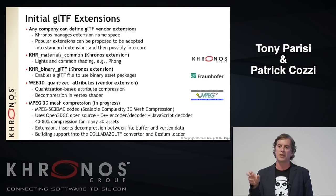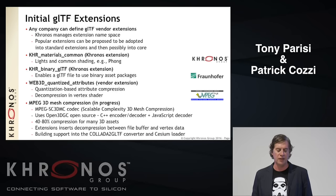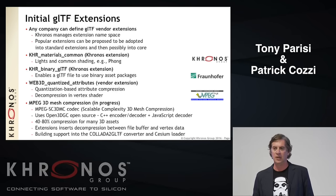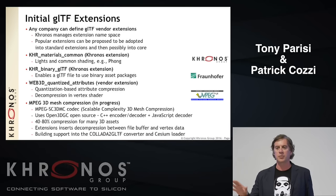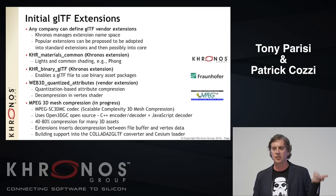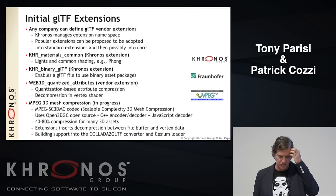We have an extension mechanism, Khronos-style, with named extensions from a vendor or Khronos itself — such as the KHR_materials_common extension. If all your scenes use Phong shading, you can create an export path that exports the GLTF with that extension. If the runtime can load the extension, it will use it; if not, it can fall back to shaders.